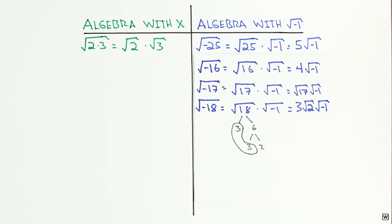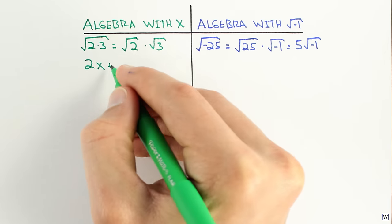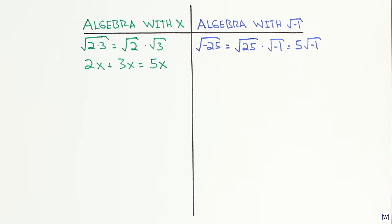Let's quickly make sure that our new numbers follow the same algebra rules as our old numbers. In algebra problems with x, only like terms can be added and subtracted. 2x plus 3x is 5x, but 2 plus 3x is just 2 plus 3x.